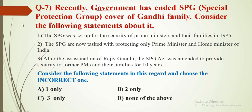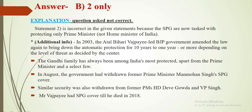Question number 7: The government has recently ended the SPG (Special Protection Group) cover of the Gandhi family. Consider the following statements. Statement 1: The SPG was set up for the security of Prime Ministers and their families in 1985. Statement 2: The SPG is now tasked with protecting only the PM and Home Minister of India. Statement 3: After the assassination of Rajiv Gandhi, the SPG Act was amended to provide security to former PMs and their families for 10 years. Choose the incorrect statement. The answer is B — second only. Statement 2 is incorrect because SPG is now tasked with protecting only the PM, not the Home Minister. In 2003, the Atal Bihari Vajpayee-led BJP government amended the law, bringing down automatic protection from 10 years to 1 year or more, depending on the level of threat as decided by the centre.